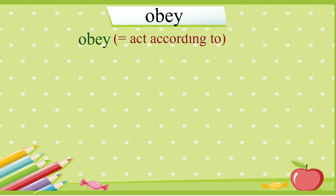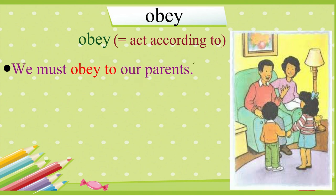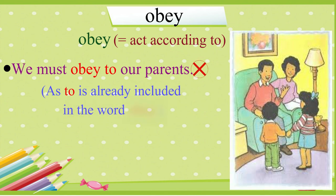Our next word is obey. Obey means act according to. It is incorrect to say we must obey to our parents or we must obey to our teachers because to is already included in obey. Repeat the correct sentence after me. We must obey our parents.